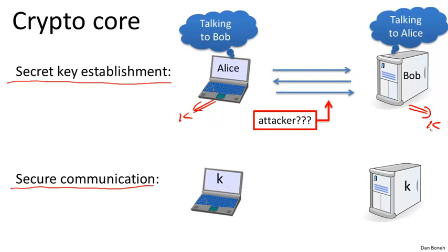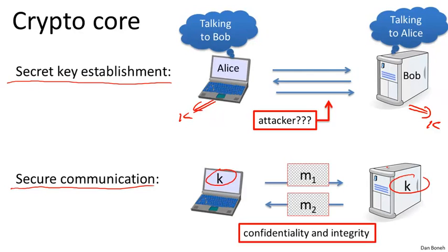We'll see how to do that later on in the course. Once they have a shared key, they want to exchange messages securely using this key. We'll talk about encryption schemes that allow them to do that in such a way that an attacker can't figure out what messages are being sent back and forth, and furthermore, an attacker cannot even tamper with this traffic without being detected. These encryption schemes provide both confidentiality and integrity.